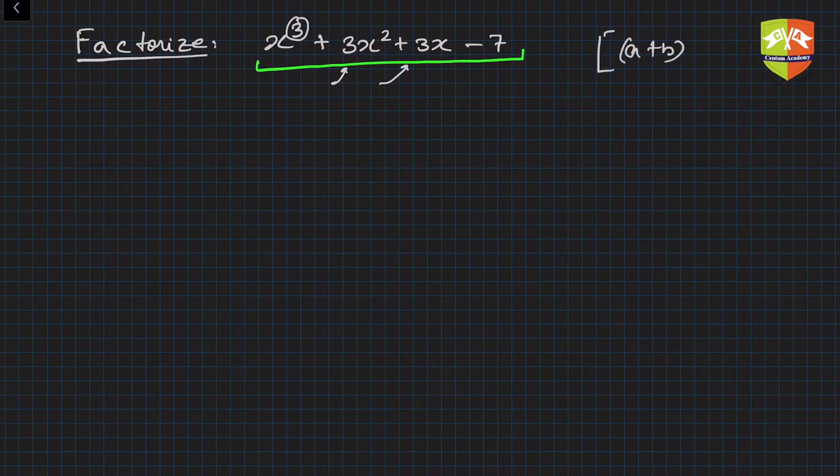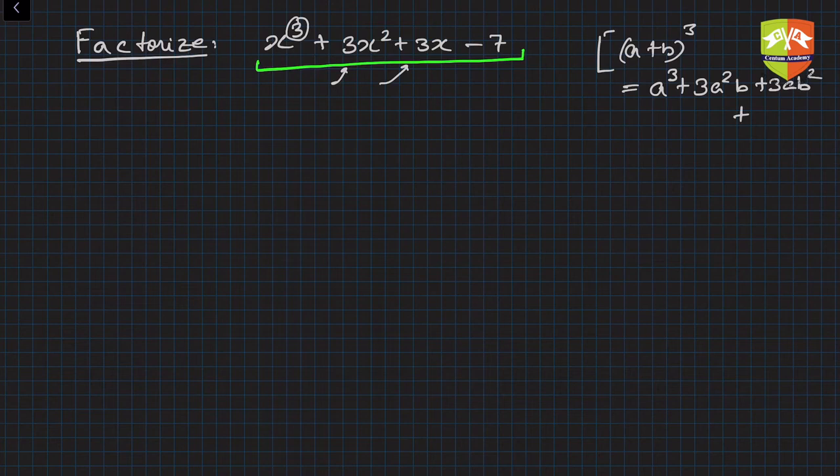Now if you recall, our (a + b)³ identity was a³ + 3a²b + 3ab² + b³. Now the same thing, if b is 1, then you get a³ + 3a² + 3a + 1.